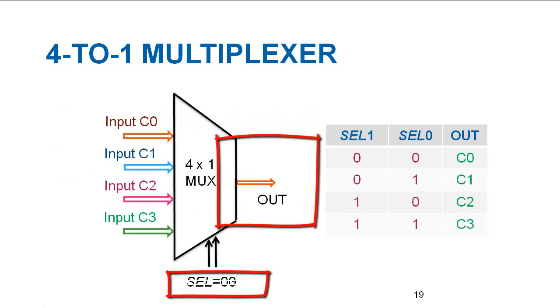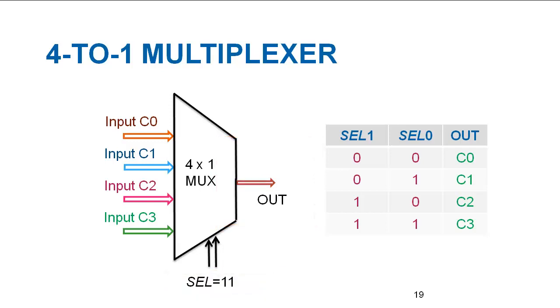In four input multiplexer, two bit control signal is required to switch between four input channels. In this design, we have input channels named as C0, C1, C2 and C3, and two bit control signal SEL.